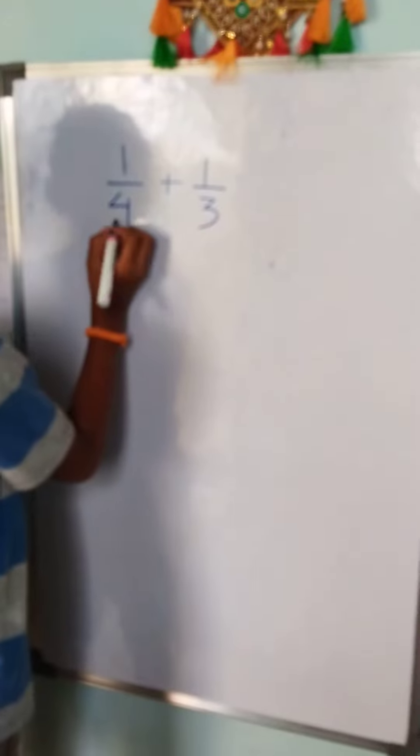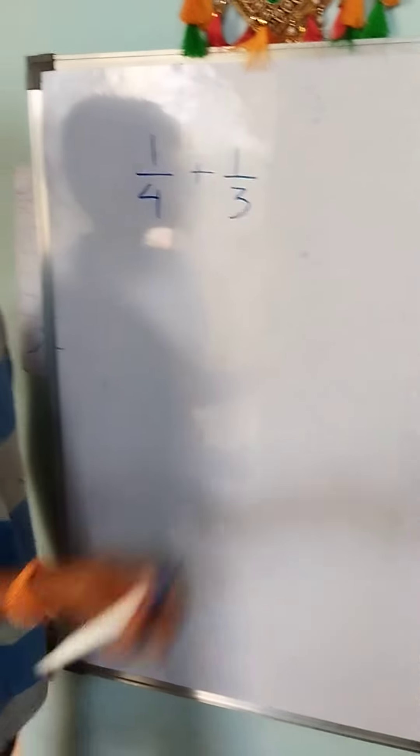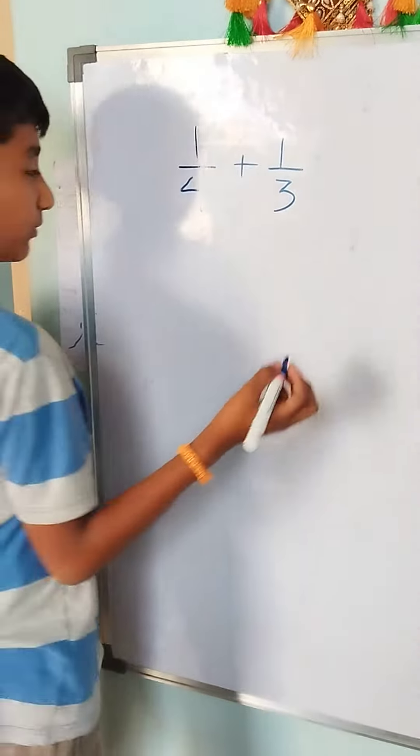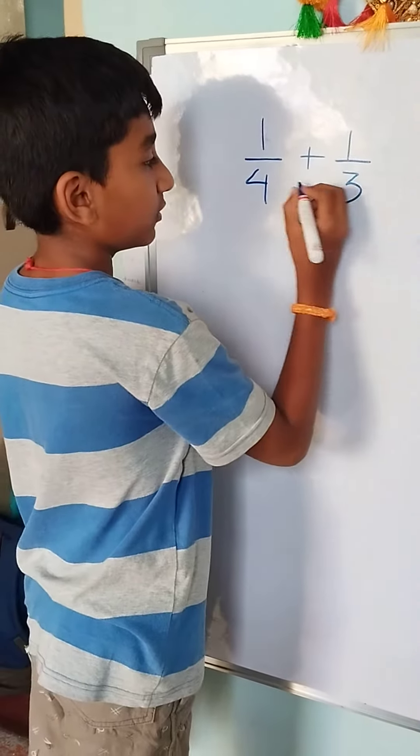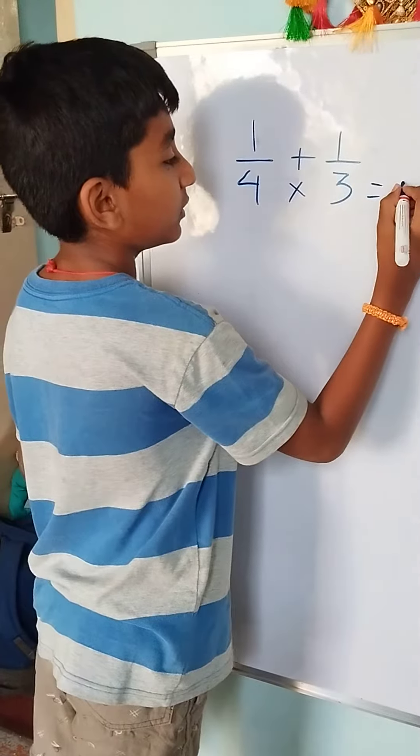Over here, 4 and 3 are co-primes. So we just multiply them directly. 4 into 3 equals 12.